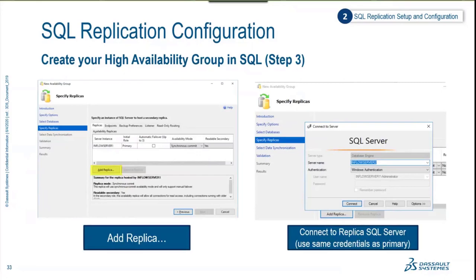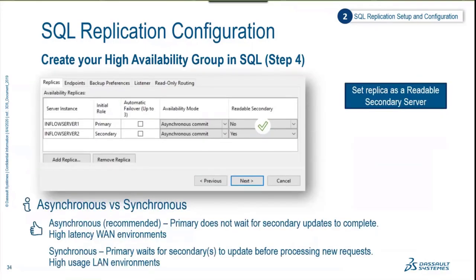Select Add Replica — it will ask you to authenticate to the secondary server using the same credentials as the primary. Add it to the list and call it a secondary. Then mark both to asynchronous commit — meaning the primary does not wait for the secondary updates to complete — which is appropriate for high-latency WAN environments. Flag your primary server as not readable and the secondary and tertiary servers as readable only. Setting those replicas as readable is a key part of the setup.